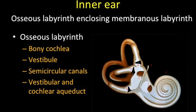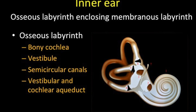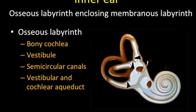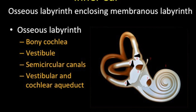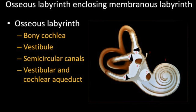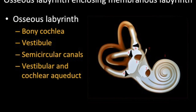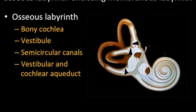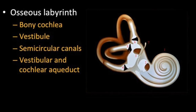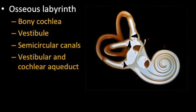Moving on to the inner ear: the inner ear comprises the osseous labyrinth, which encloses the membranous labyrinth. The osseous labyrinth constitutes the bony cochlea, vestibule, semicircular canals, and the vestibular and cochlear aqueducts.